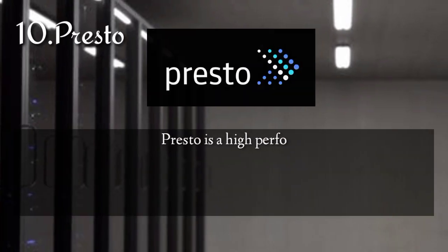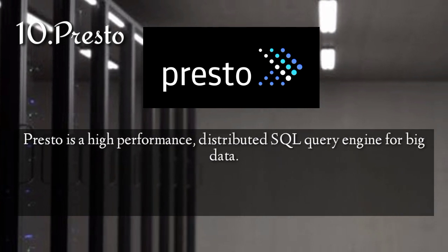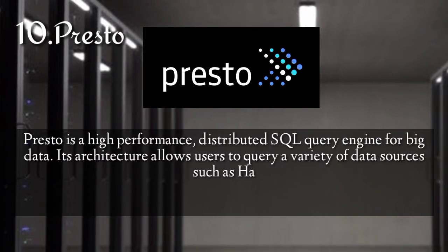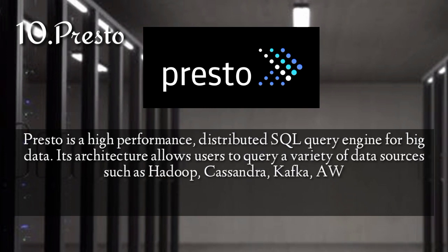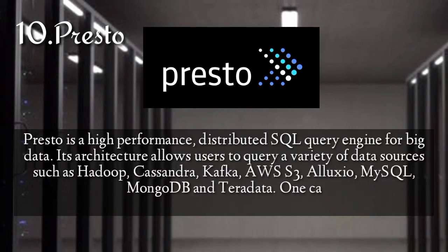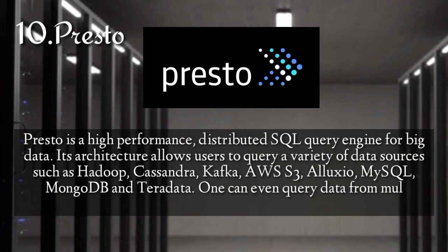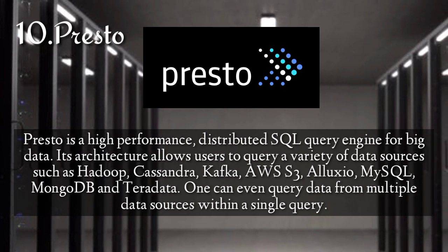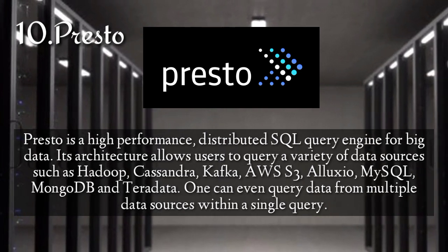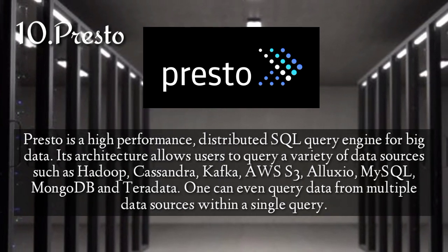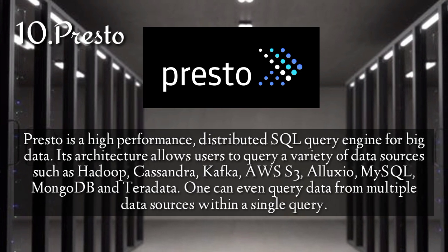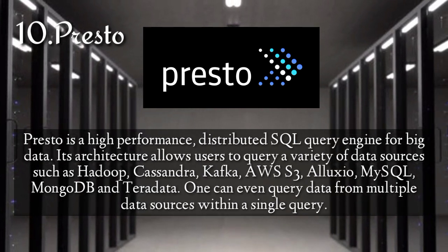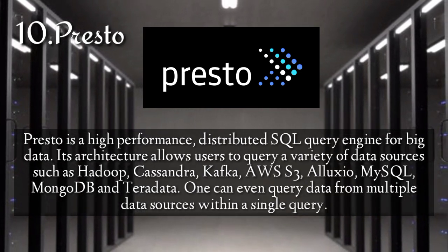Presto is a high-performance, distributed SQL query engine for big data. Its architecture allows users to query a variety of data sources such as Hadoop, Cassandra, Kafka, AWS S3, Alluxio, MySQL, MongoDB, and Teradata. One can even query data from multiple data sources within a single query.